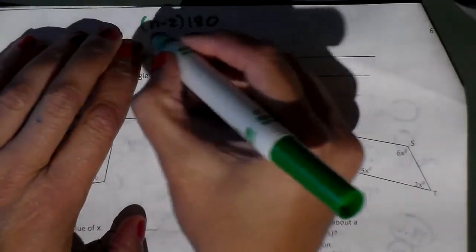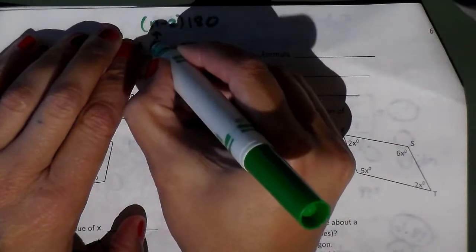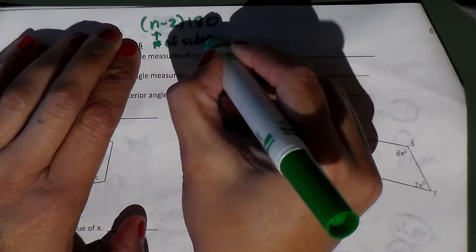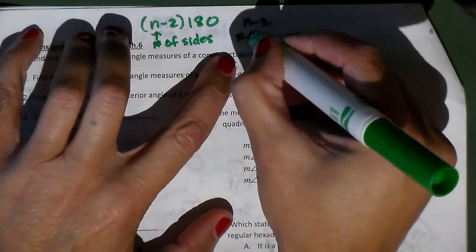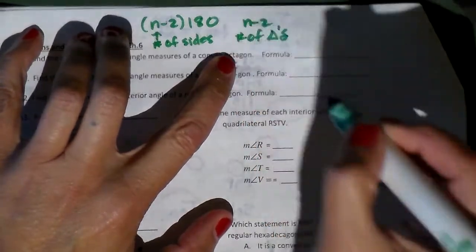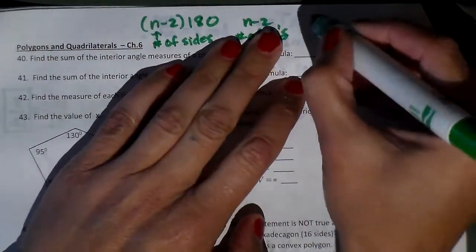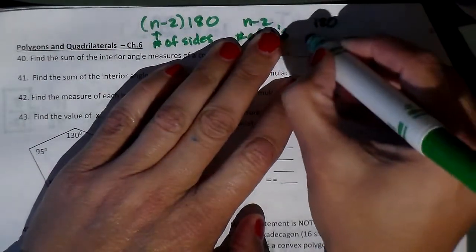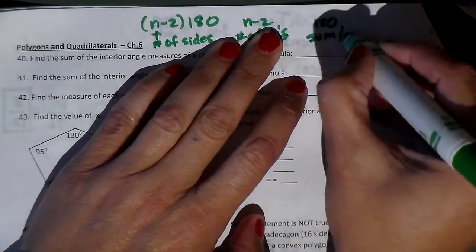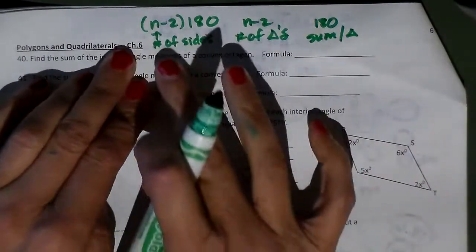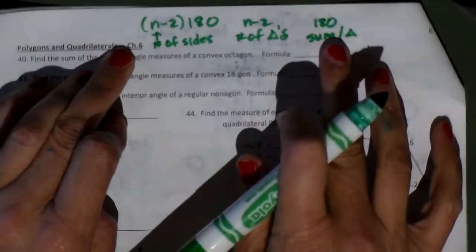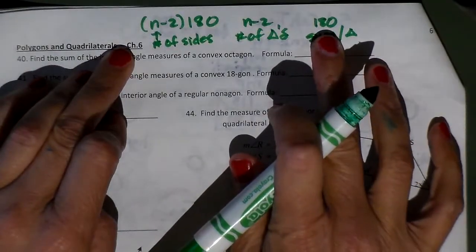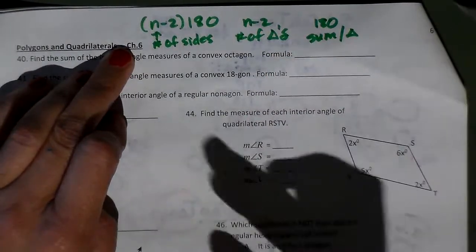It is n minus 2 times 180. n is the number of sides that the polygon has. n minus 2 is the number of triangles you can divide that polygon into, and 180 is the sum per triangle. So basically, you take the number of sides and subtract 2, that tells you how many triangles you can divide the figure into, and then multiply each triangle by 180.